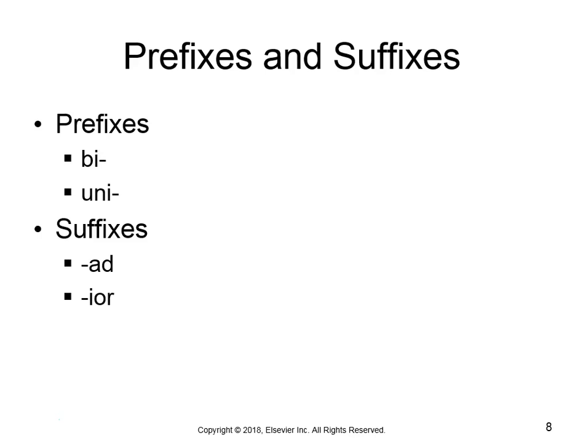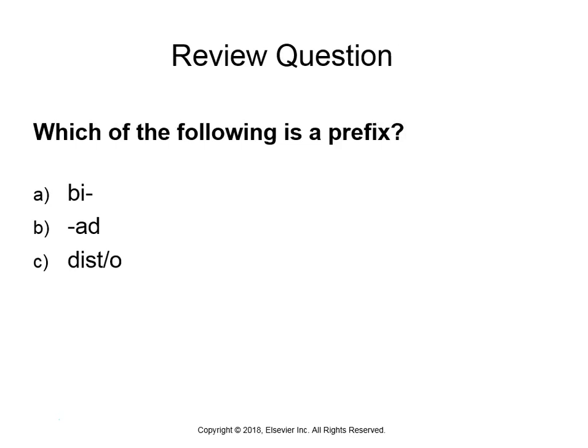The suffix -ior is another one that means pertaining to. In Chapter 2 we saw -ical and -ous, which all meant pertaining to — so does -ior. But -ad means something a little different: it means toward. So if you're going toward the head, toward the tail, or toward the outside of the body, you'd use -ad. It does not necessarily mean the same thing as pertaining to.